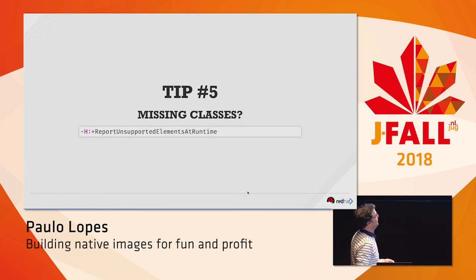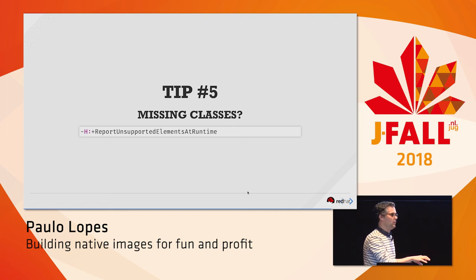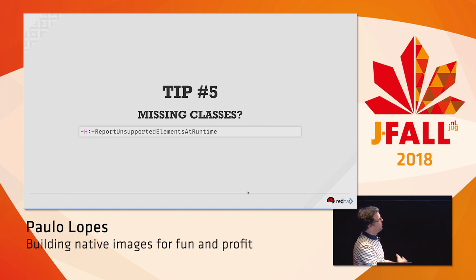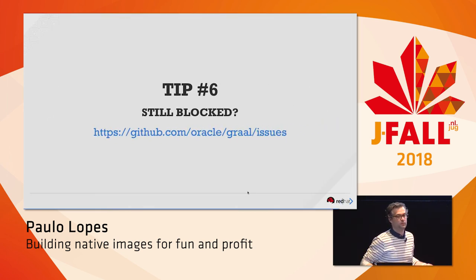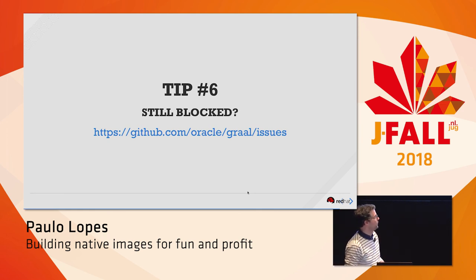Tip five: if your application requires some optional classes, the native compiler needs to know everything ahead of time and will assume the application is incomplete if it can't find a class. You can say: if you're missing some classes, compile anyway and just give me an exception at runtime. Tip six: if nothing else works, just open an issue on the GraalVM GitHub repository — they are quite helpful and reply to things really quickly.